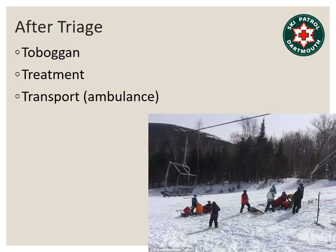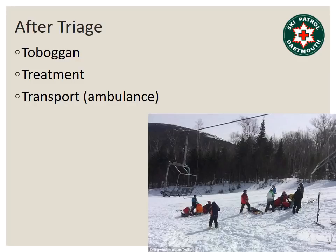Once all the patients have been triaged, the deceased patients will be left in place. The immediate red tag patients will start being quickly treated on scene but most importantly loaded into toboggans and removed to the treatment area or casualty collection point, which may be in the aid room, upstairs in the lodge, or depending on the situation in the snowcat garage, snowmaking building, or Ford Sayer building — it's a game-time call based on the situation. Once all the reds have been transported off scene, you can start on the yellows. As patients arrive in the treatment area they will be retriaged to make sure their condition hasn't changed, and as ambulances arrive the worst reds will be transported first, then the yellows, then the greens.